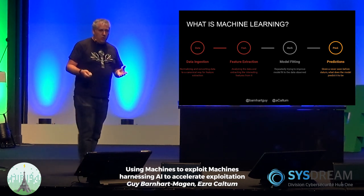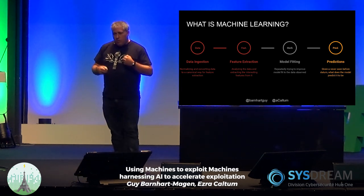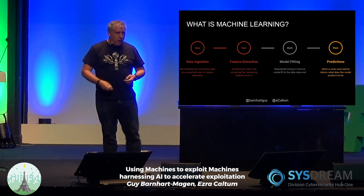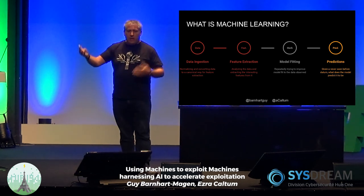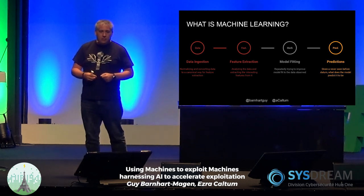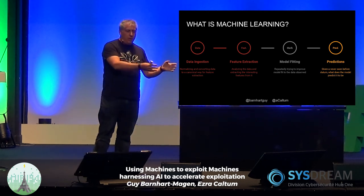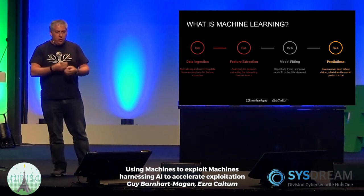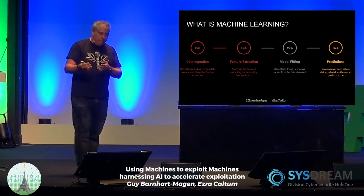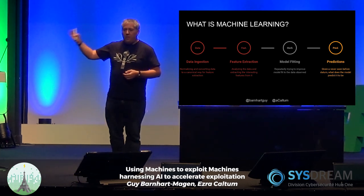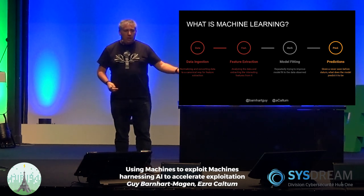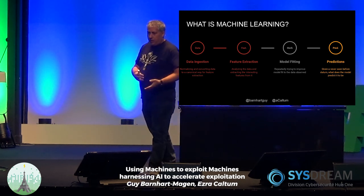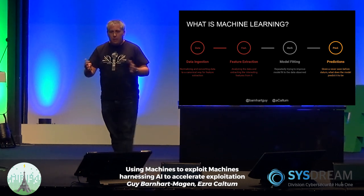The first part of the pipeline is data ingestion — the way the machine learning model feeds on data. When you think about machine learning models, you might have inputs like images. For example, building a model to discern between images of cats and dogs — the inputs are images of cats and dogs, sometimes labeled. The machine learning model takes these inputs and builds an internal representation that it matches against whatever it saw previously, learning to differentiate between classes.